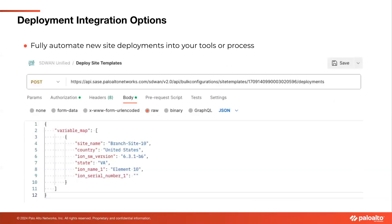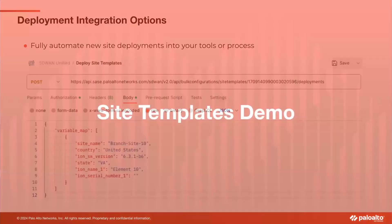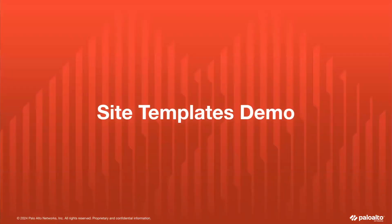Because Prisma SD-WAN is a fully REST API product, every feature — including site templates — is also accessible via API. Customers can extend this and build it into their own tools. For example, you could have an internal form where every time a new site needs to be stood up, a ServiceNow ticket is created with the site name, country, software version, and required variables — which kicks off an API call to the controller to spin up that site. This makes it a truly zero-touch provisioning workflow without ever interacting with the UI.